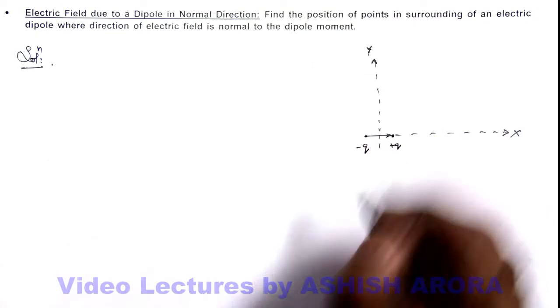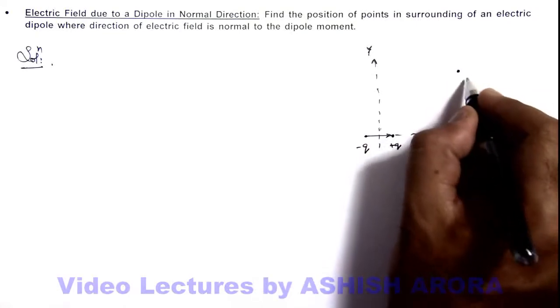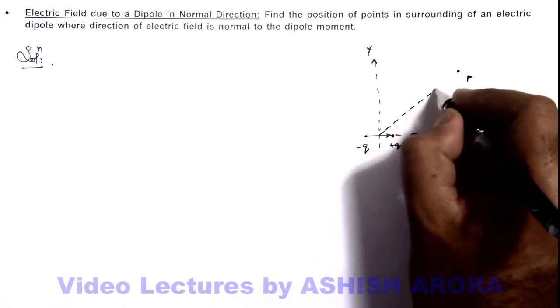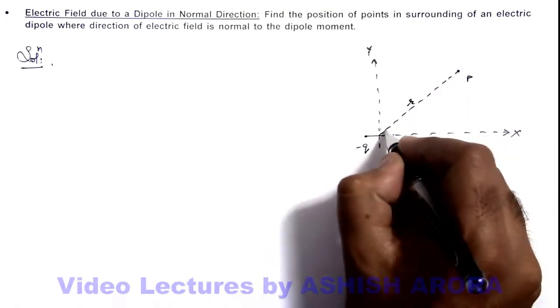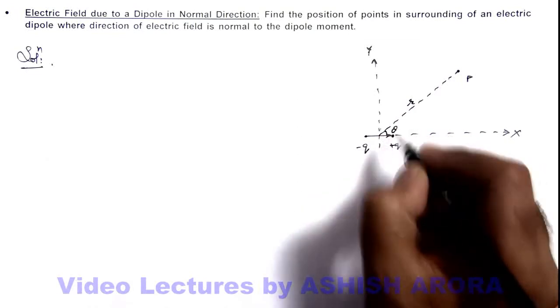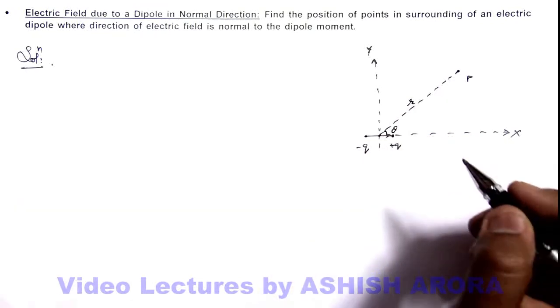If we consider a general point P in surrounding which is at a coordinate r and theta, so we are at polar coordinates r and theta with respect to the center of this dipole.